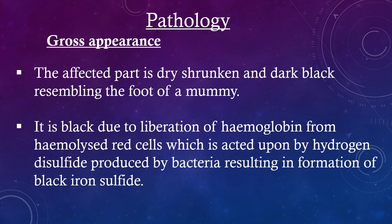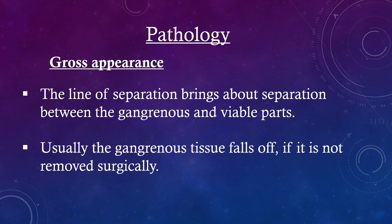Pathology — Gross appearance: The affected part is dry, shrunken and dark black, resembling the foot of a mummy. It is black due to liberation of hemoglobin from the hemolyzed red cells, which is acted upon by hydrogen disulfide produced by bacteria, resulting in formation of black iron sulfide. The line of separation brings about separation between the gangrenous and viable parts. Usually the gangrenous tissue falls off if it is not removed surgically.